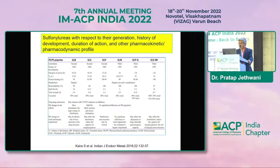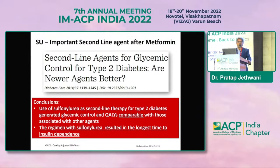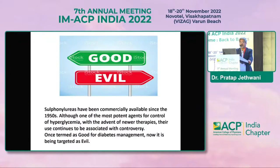This is the PK/PD profile of various sulfonylureas available, but I will be focusing mainly on modern sulfonylureas — glimepiride and gliclazide or gliclazide MR — because they have the best evidence to support their use in type 2 diabetes. A paper from 2014 suggested that sulfonylureas as a second-line agent generated glycemic control and quality-of-life-adjusted years comparable with newer agents like DPP-4 inhibitors, and this regimen resulted in the longest time to insulin dependence.